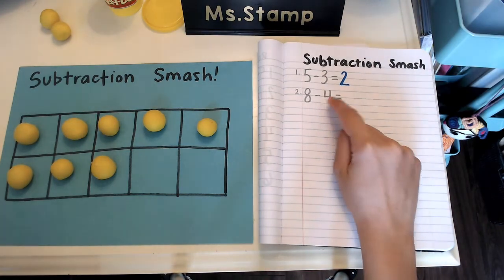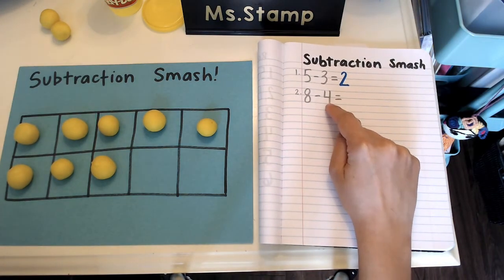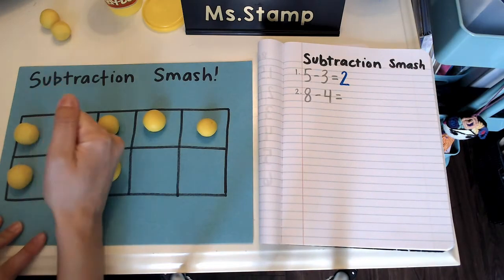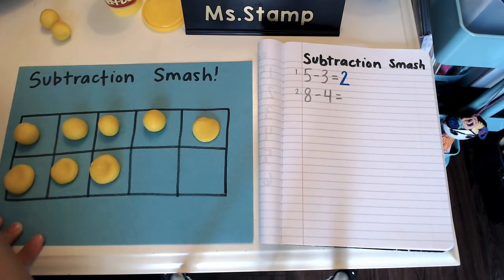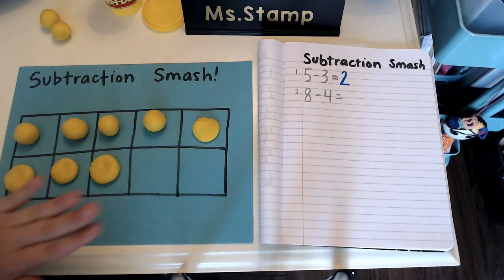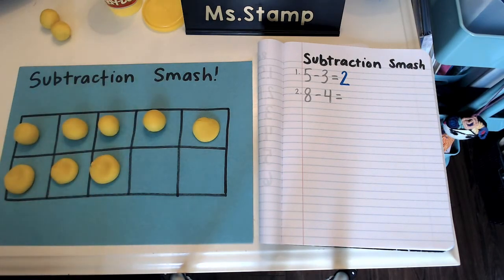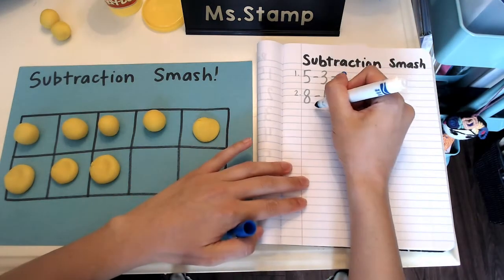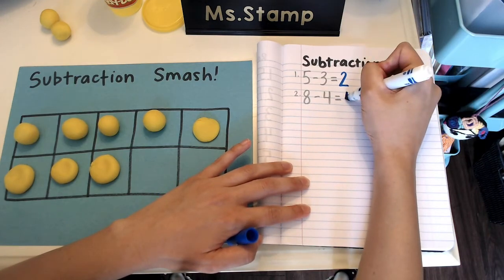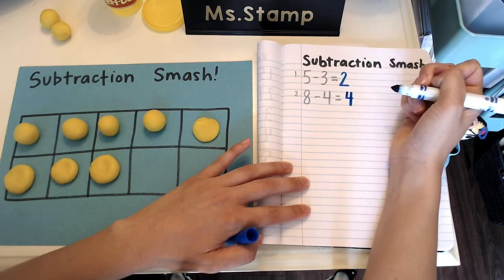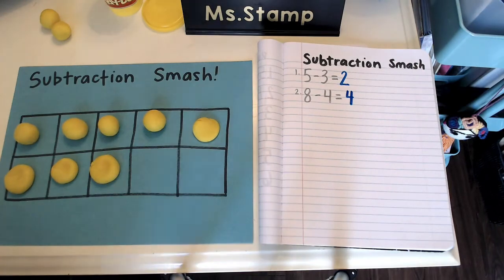All right, eight minus four means we need to take four away. So let's smash four. Ready? One, two, three, four. And how many do you have left? We have one, two, three, four. Four were smashed and we have four left. So eight minus four equals four. To write the number four you go down, over, down some more to make the numeral four.